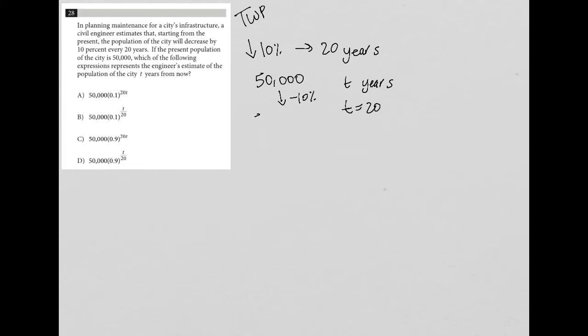You can go to your calculator and just multiply 50,000 times 0.1, which is representative of 10%. So that's going to be equal to 5,000. So after 20 years, we expect the population to now be 45,000 people.